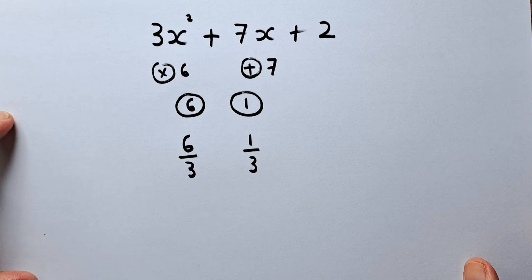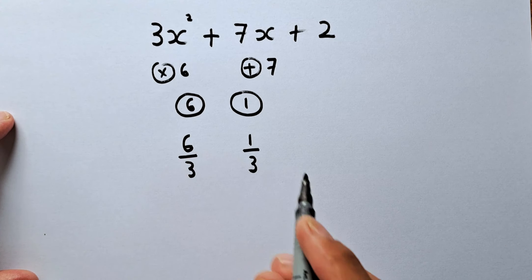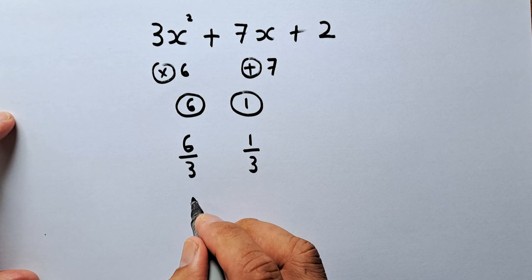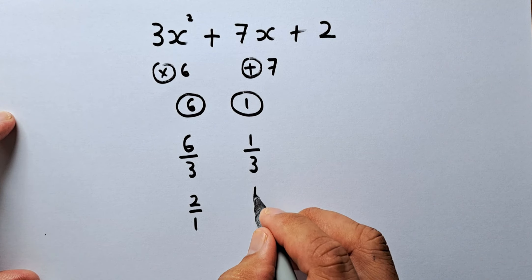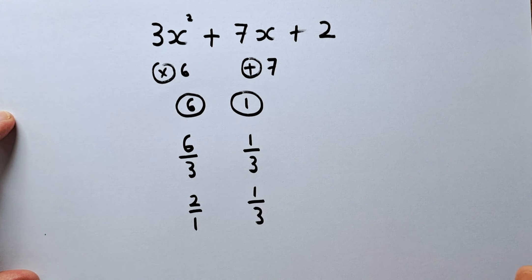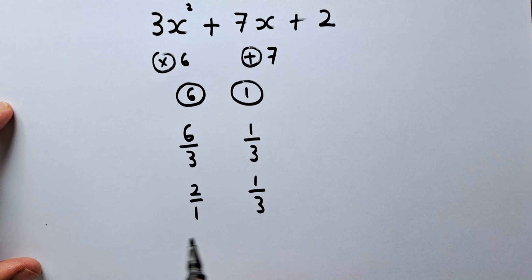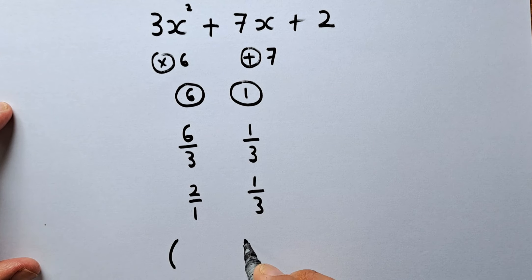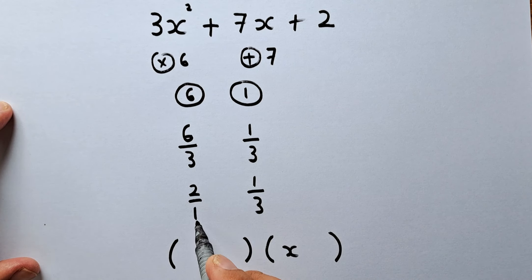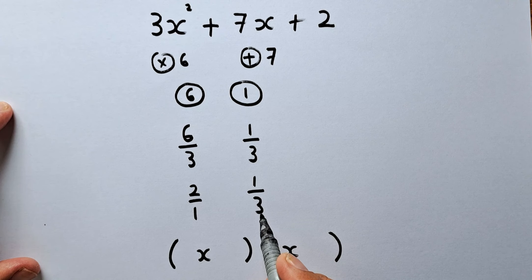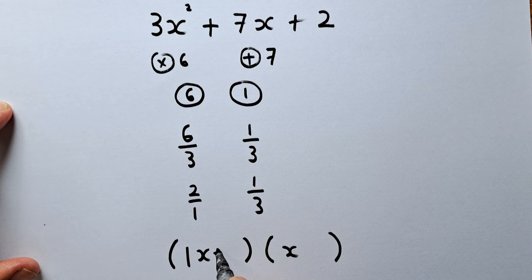Next step, we are going to simplify the fraction. 6 over 3 is the same as 2 over 1, and 1 over 3 remains as 1 over 3. And the last step, we put in brackets, and we put an x there and an x there. The 1 and the 3 is called the x number, so the 1 will go up and 2 will just plus 2.